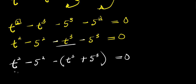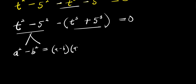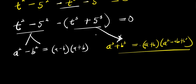We have a t² term and a t³ term, so we need to expand each of these. To expand t² minus 5², we use the difference of two squares identity: a² minus b² equals (a minus b)(a plus b). To expand t³ plus 5³, we use the sum of cubes identity: a³ plus b³ equals (a plus b)(a² minus ab plus b²). Here our a is t and b is 5.